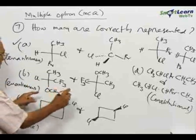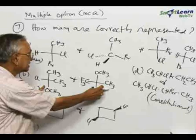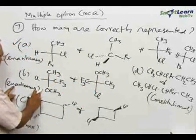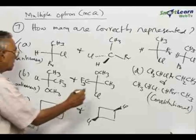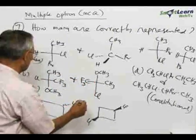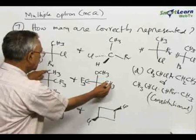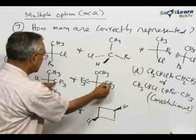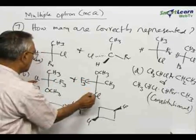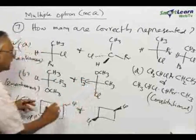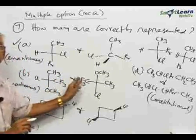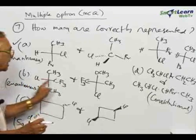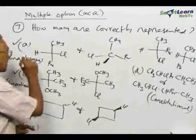Now we come to pair B. Both structures are given as Fischer projections, so we just need to compare them and verify whether the claimed relationship of enantiomers is correct. Starting with CH3, we bring CH3 here and OCH3 here, then chlorine there and OCH3 here. By making three interchanges the two structures become identical. Since an odd number of interchanges were made, they are enantiomers — so pair B is also correctly represented.